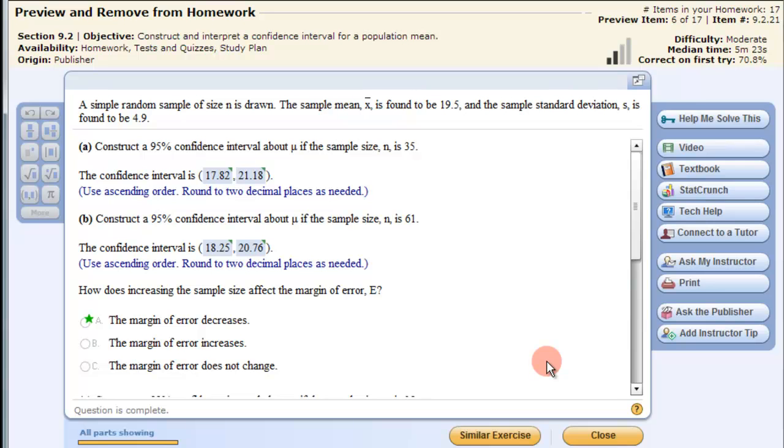In this video we are going to use Microsoft Excel to construct a confidence interval for a population mean. We will be using a t statistic for that as well. So here is an example: a simple random sample size n is drawn, the sample mean is found to be 19.5 and the sample standard deviation s is found to be 4.9. We are going to construct a 95% confidence interval about the population mean that the sample size n is 35, and these are the answers.